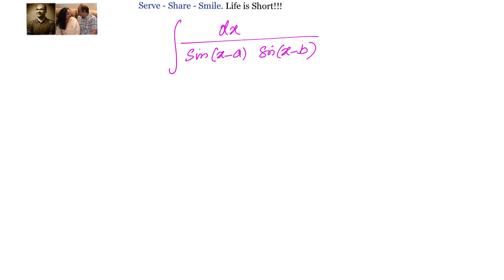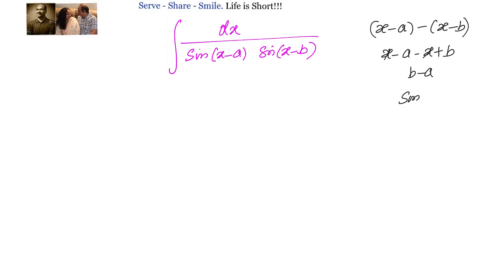Let's see what happens if we compute (x-a) minus (x-b). That gives x minus a minus x plus b, so x and x cancel, leaving b minus a. Now, b minus a is a constant numerical value, so sin(b-a) is also a constant. What we will do then is multiply and divide the given integral by sin(b-a).